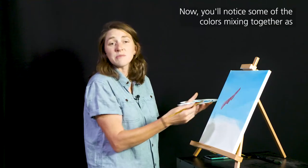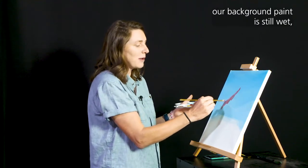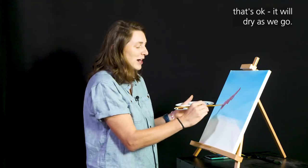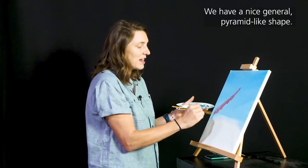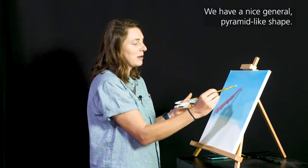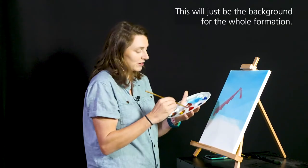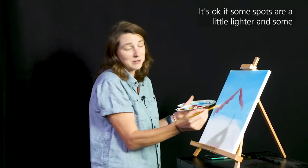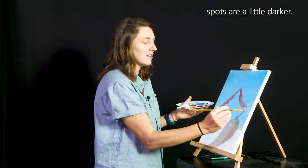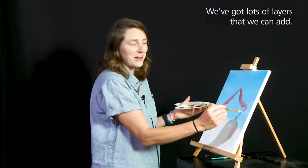Now you'll notice some of the colors mixing together as our background paint is still wet. That's okay. It'll dry as we go. I have a nice general pyramid-like shape. This will just be the background for the whole formation. It's okay if some spots are a little lighter and some spots are a little darker. We've got lots of layers that we can add.